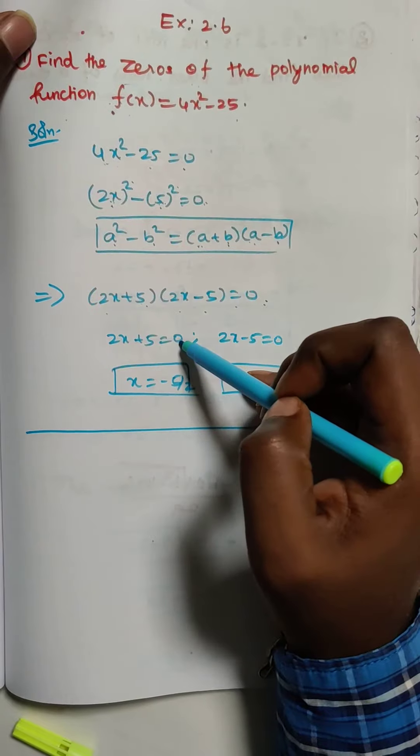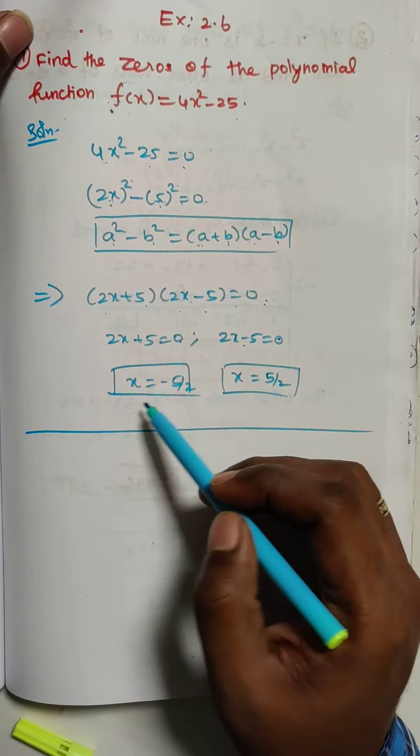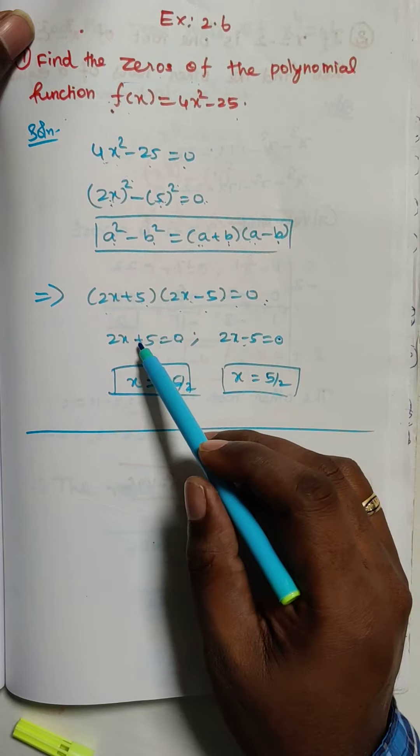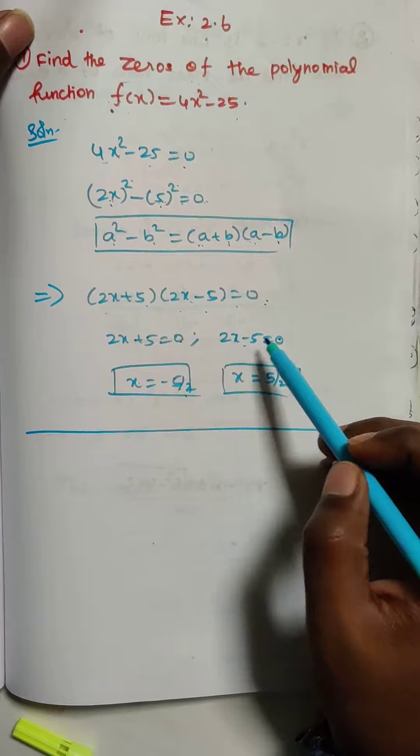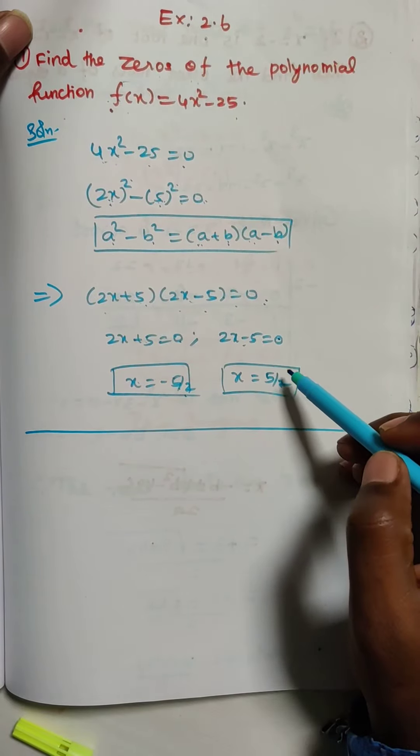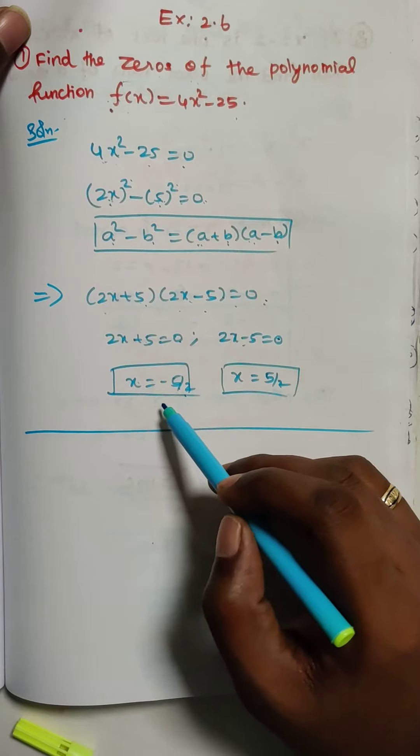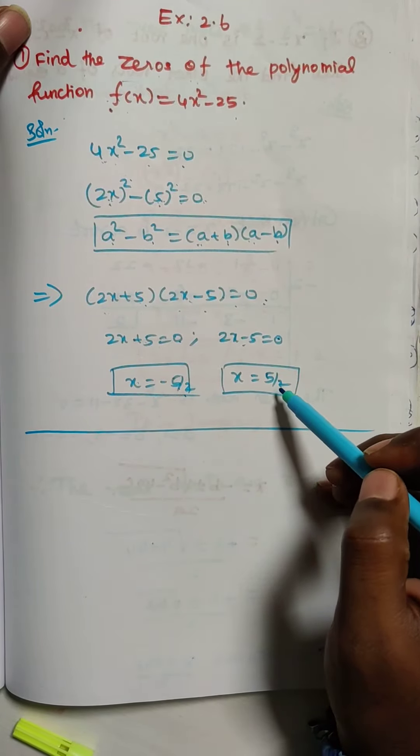So now 2x + 5 = 0 and 2x - 5 = 0. Then x = -5/2. Here, 2x = 5, then x = 5/2. So the solution is x = -5/2 and x = 5/2.